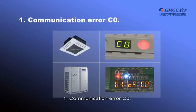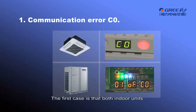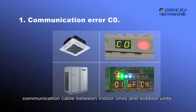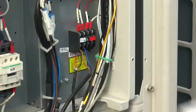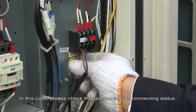First, Communication Error. There are two cases for this error. The first case is that both indoor units and outdoor units display C0, which means the main communication cable between indoor units and outdoor units is broken or disconnected. In this case, please check the communication connecting status.